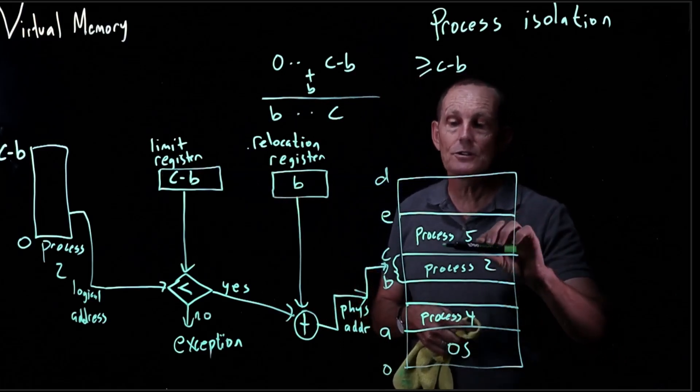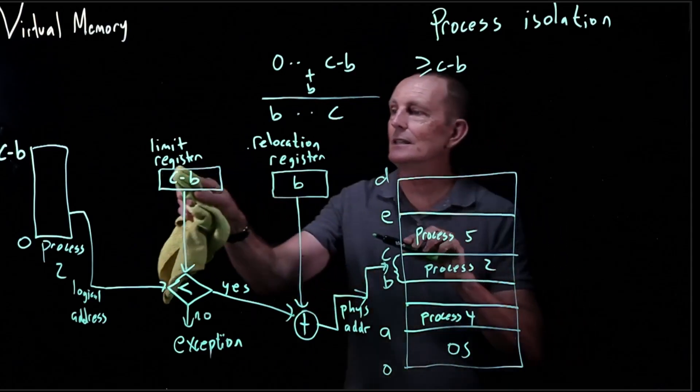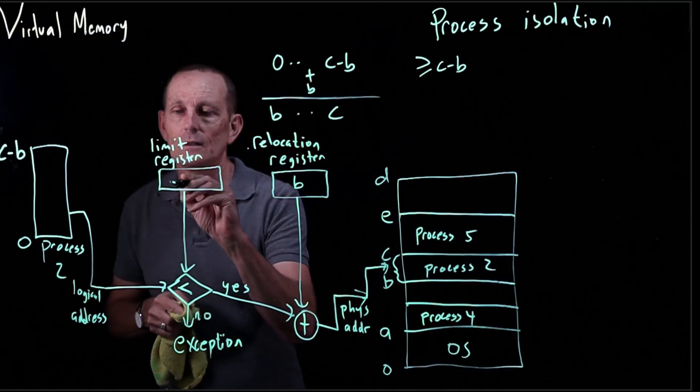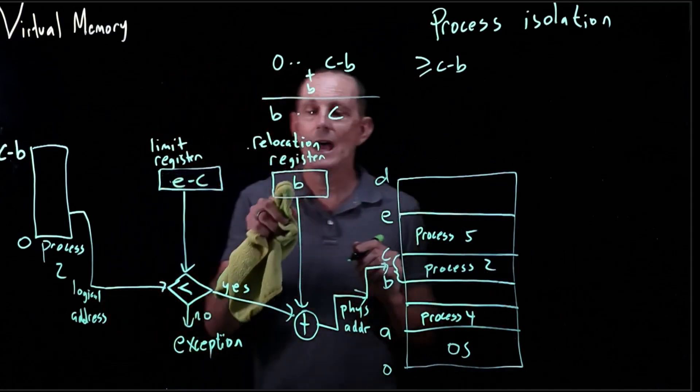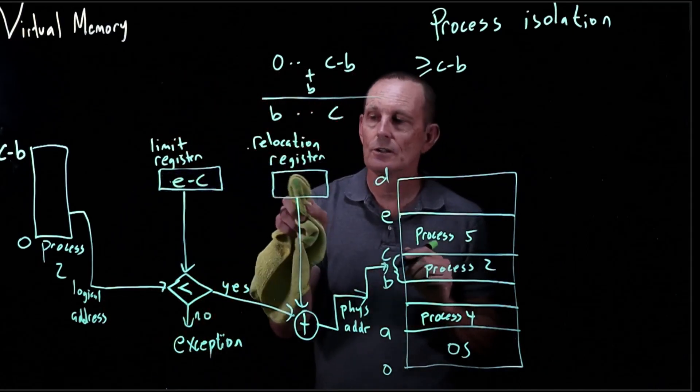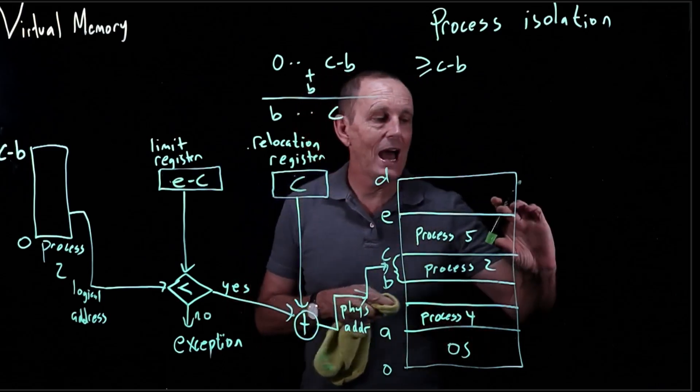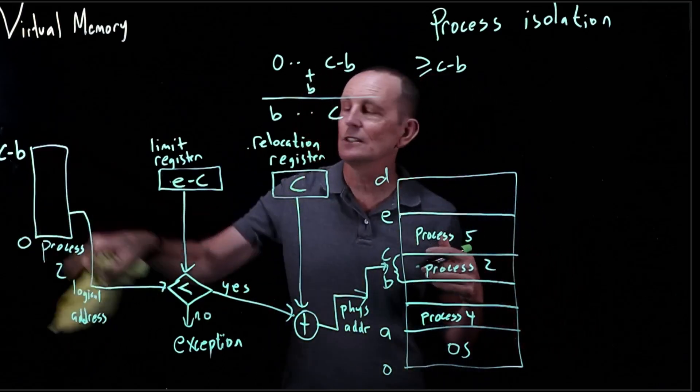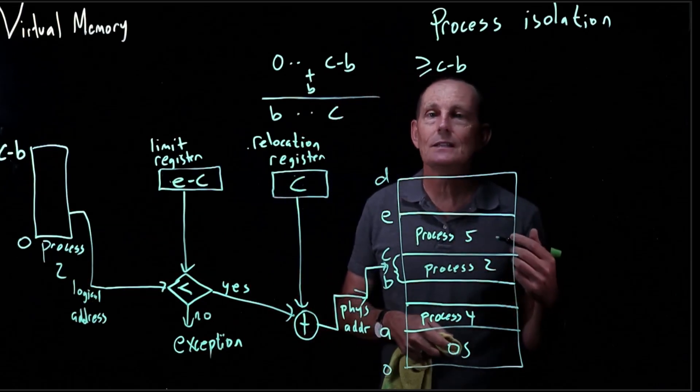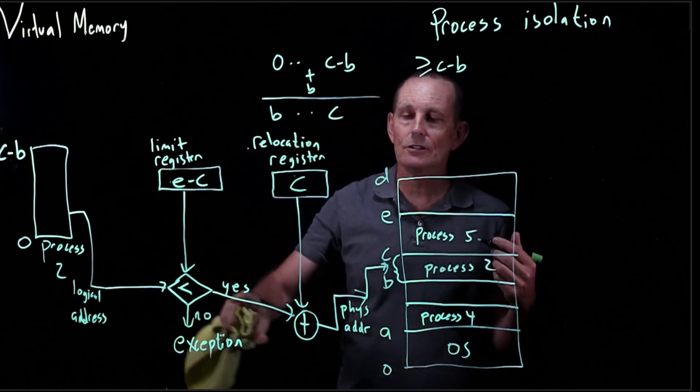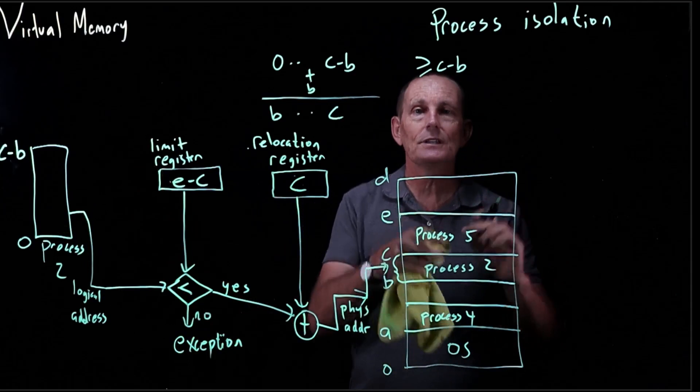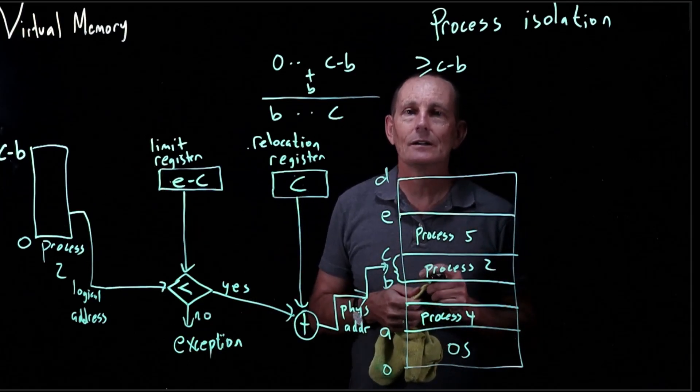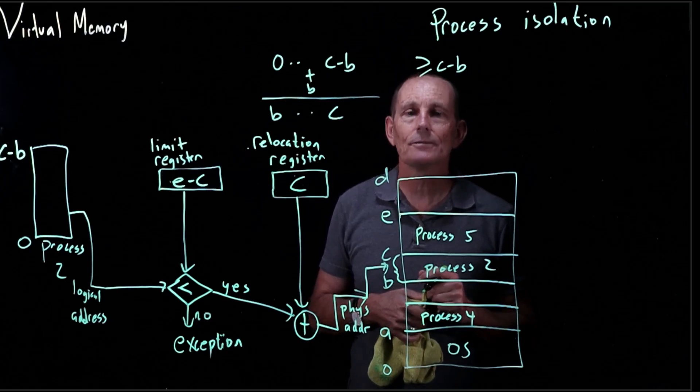What were those limit and relocation registers? The limit register was E minus C, and the relocation register was C. So now process five has logical addresses from zero to E minus C, and they get converted to physical addresses from C to E. That's how hardware can help in providing process isolation.